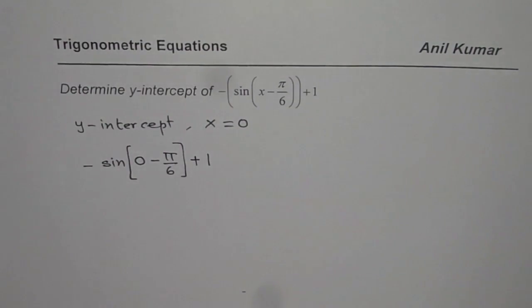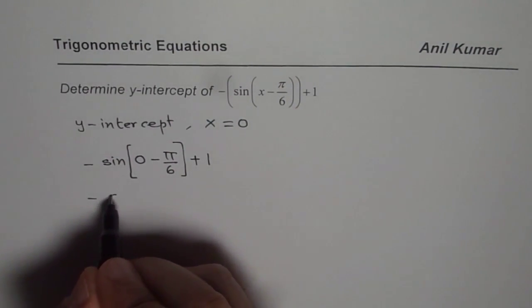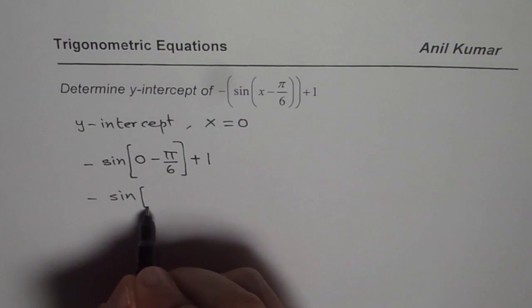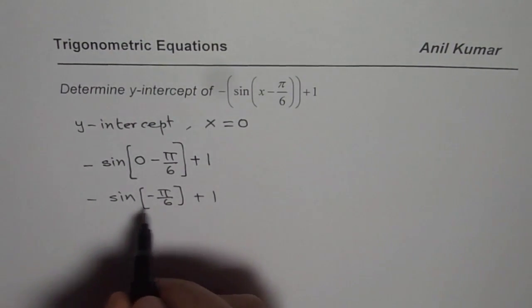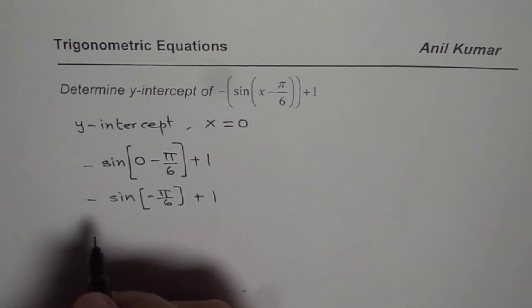So that is my function. 0 minus π/6 is indeed just sine of minus π/6, plus 1, and sine of minus θ is minus sine θ.